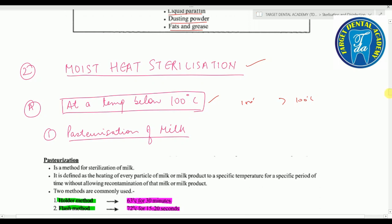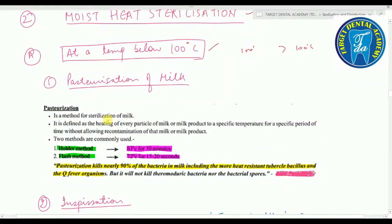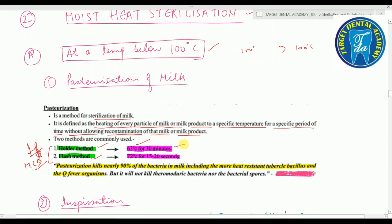At temperature below 100°C, the first method is pasteurization of milk — defined as heating every particle of milk or milk product to a specific temperature for a specific period of time without allowing recontamination. There are two important methods: the holder method at 63°C for 30 minutes, and the flash method at 72°C for 15 to 20 seconds. Please note these — they are important MCQ points.